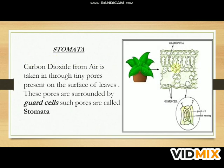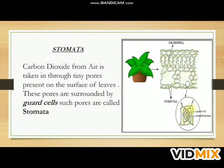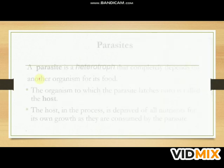Carbon dioxide from air is taken in through tiny pores present on the surface of the leaf. These pores are surrounded by guard cells. Such pores are called stomata. We can see with the help of this figure that the guard cells surround the pore, which is known as the stomata.